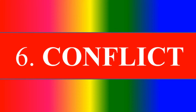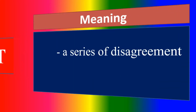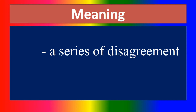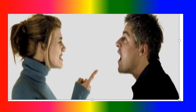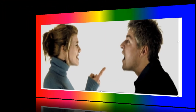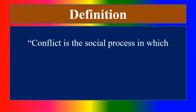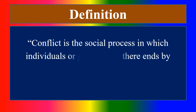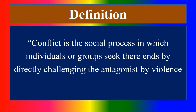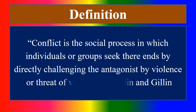Next section: Conflict — in detail. What is meant by conflict? A series of disagreement. Can you define conflict? Conflict is the social process in which individuals or groups seek their ends by directly challenging the antagonist by violence or threat of violence.